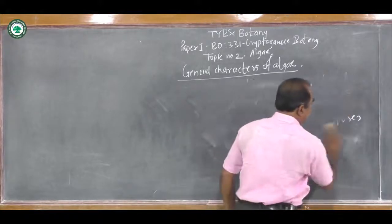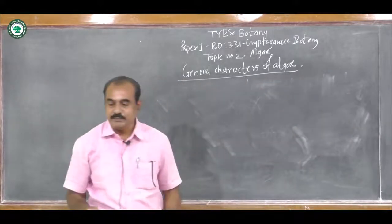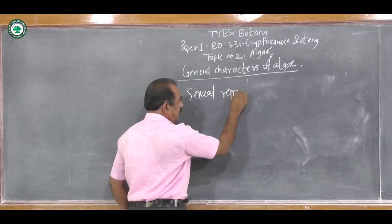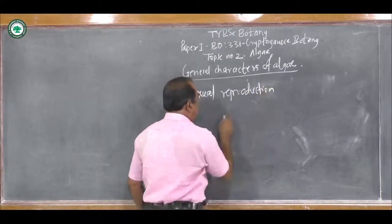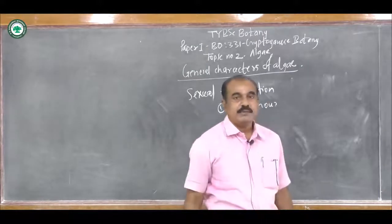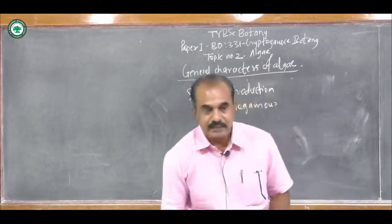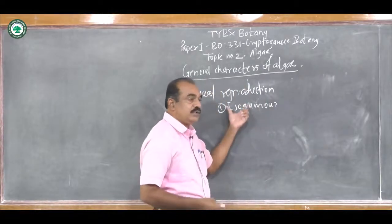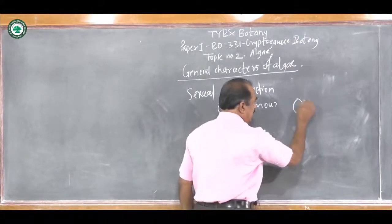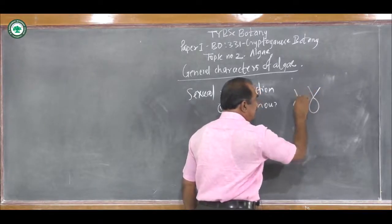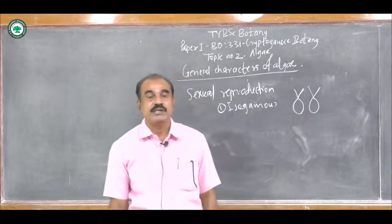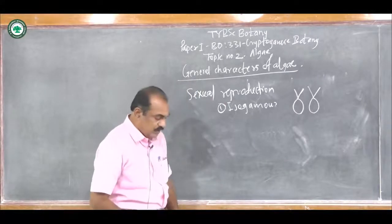Third is Sexual Reproduction, which is again of two different types. Number one is Isogamous. Here, both the gametes are equal in their size, structure, and behavior. When such gametes unite with each other, that type of sexual reproduction is called Isogamous type of sexual reproduction. Both gametes are same in size and structure, and when they unite, that is called Isogamous sexual reproduction.